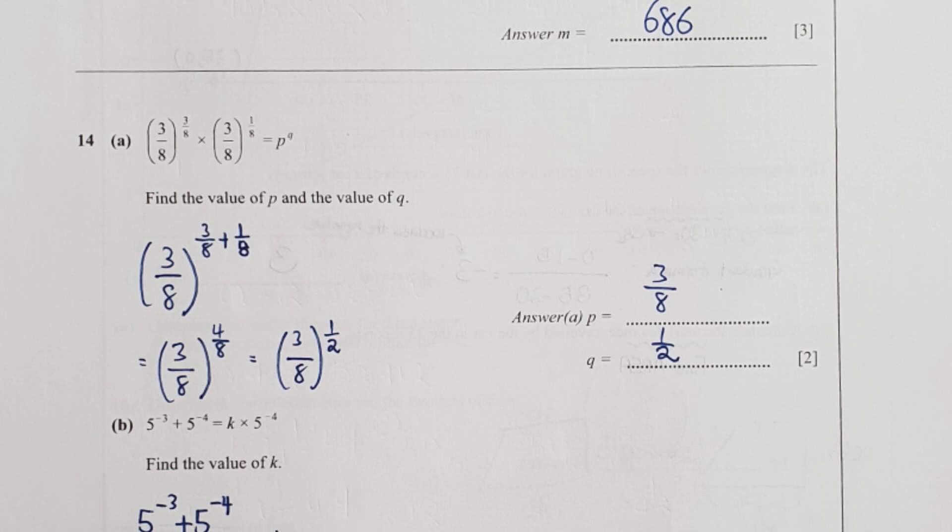Question 14, this is the indices topic. For part a, since the base are both the same which is 3/8, I just take their power, add them both up. So my p will be 3/8 and my q will be 1/2.